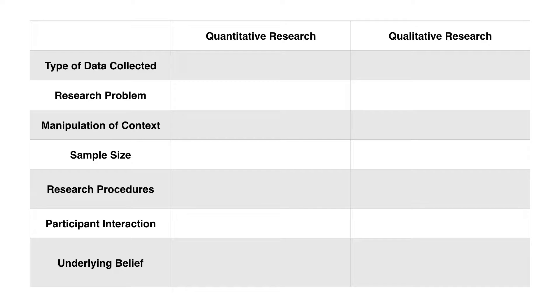First, we begin by comparing research methods. In general, there are two research methods: quantitative and qualitative, and they differ in a variety of ways. With respect to the type of data collected, quantitative research is typically numerical data, whereas qualitative research is non-numerical — it's narrative and visual data.